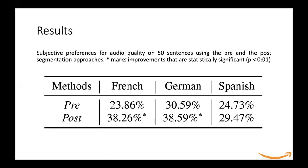We also test subjective preference of audio quality on 50 utterances — different from the previous ones — by comparing the pre- and post-segmentation approaches. We gave these 50 sentences to users and asked them to mark which of the two they preferred. For French and German, users preferred the post-segmentation approach for close to 38 to 39 percent of sentences over the pre-segmentation approach, and this is statistically significant. For Spanish, there is no statistical significance at p-value less than 0.01, however there is an improvement of 5 percent as shown in the table.